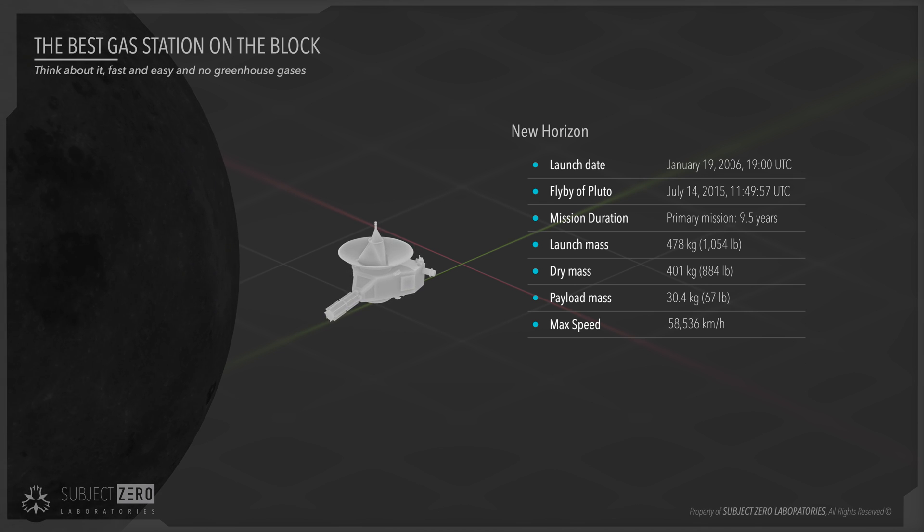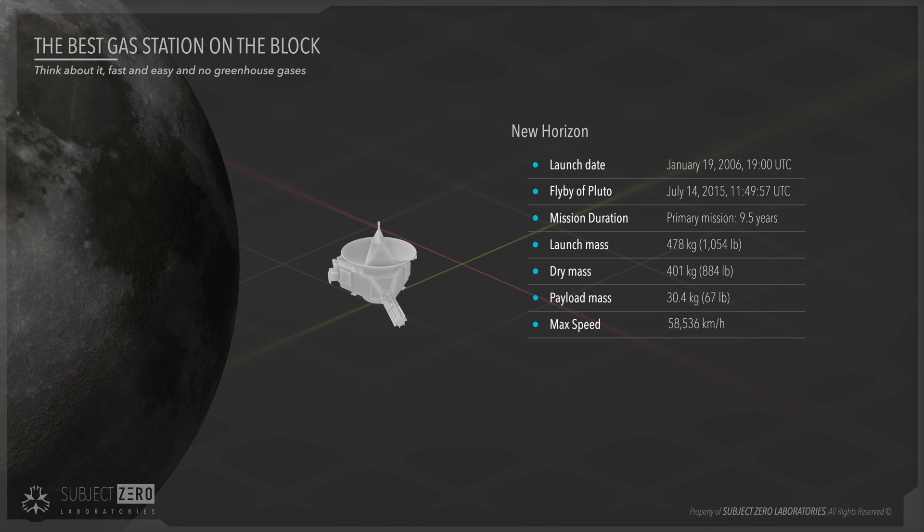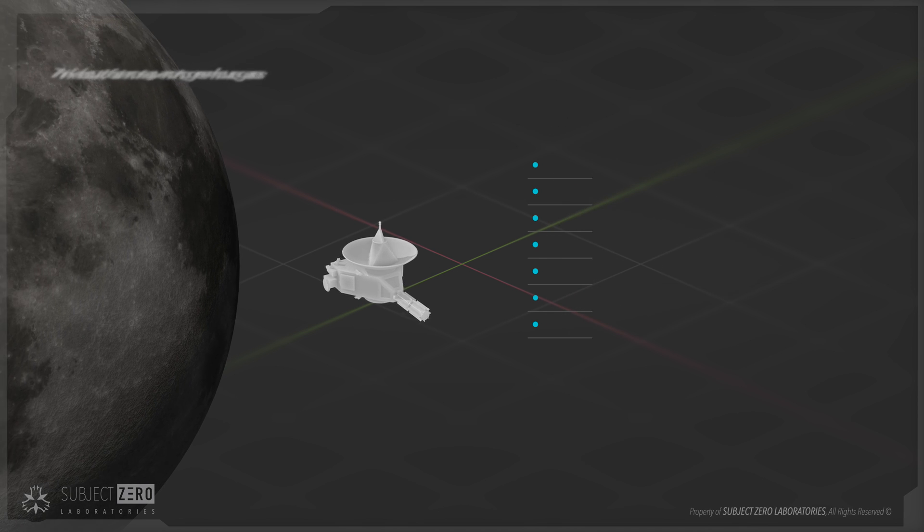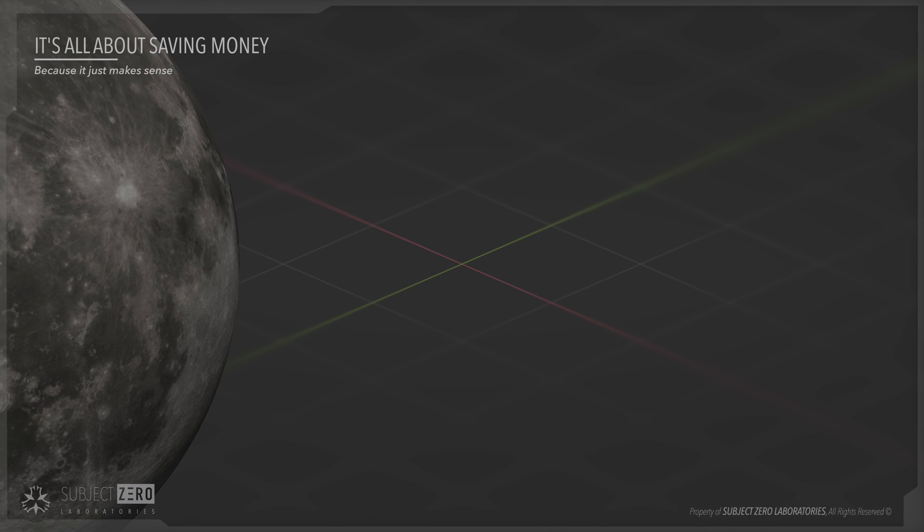Let's consider the New Horizons mission, which took about 9.5 years to reach Pluto. If we could refuel, the total time could be shortened to only two years and instead of doing a flyby, it would actually be able to put the satellite into Pluto's orbit. The idea is fairly simple, we would launch the rocket,